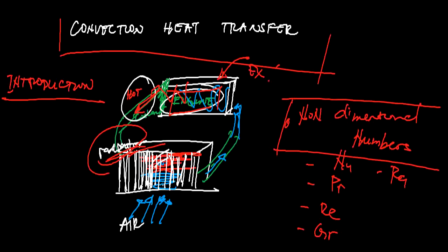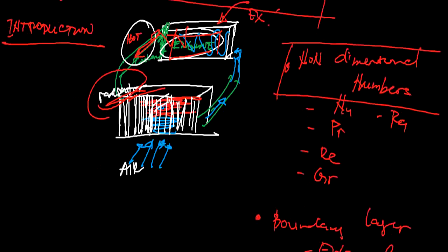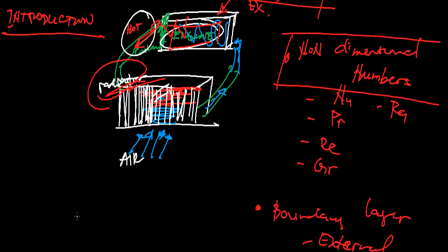The fluid may be flowing inside an enclosed conduit — for example, steam flowing through a pipe — or the fluid may flow over a solid surface, such as air flowing over a heated plate.